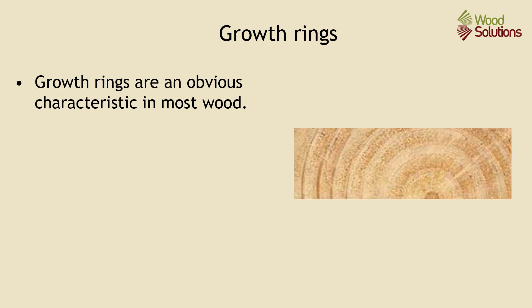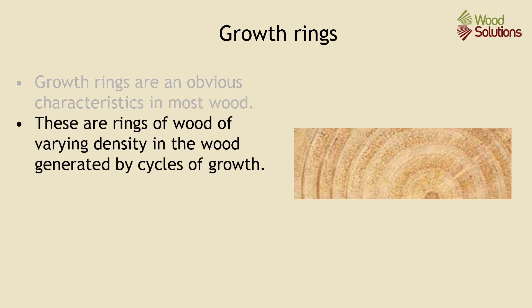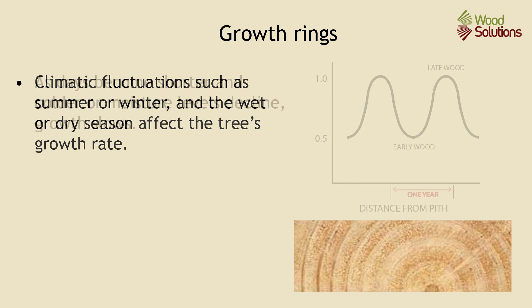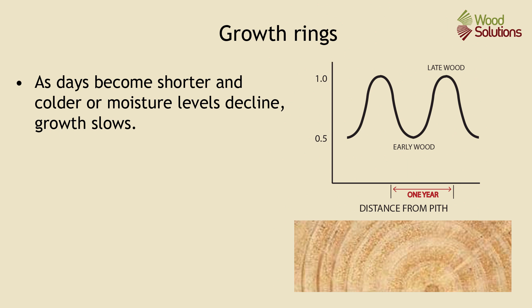Growth rings are an obvious characteristic in most species of wood. They are rings of wood of varying density, generated in the wood by cycles of growth in the tree during summer and winter, or during wet season and dry season. As days become shorter and colder, or moisture levels decline, growth in the tree slows.